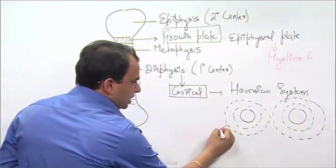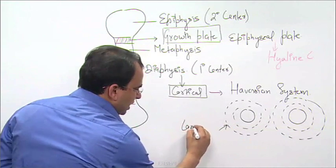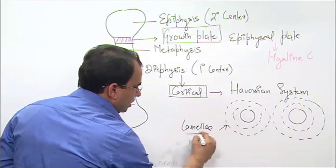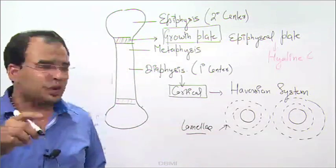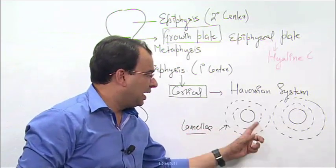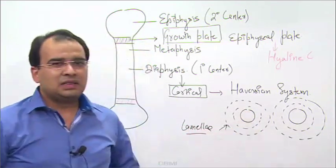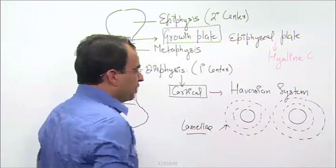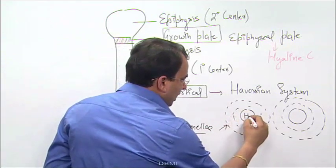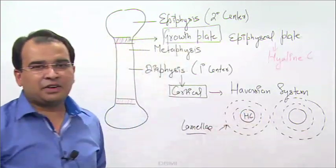These are called lamellae, concentric lamellae encircling it. So we call them concentric lamellae encircling these canals. These canals are called haversian canals. I am writing only HC, that is haversian canal.